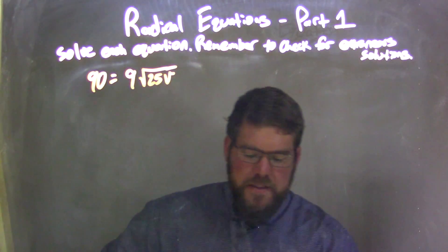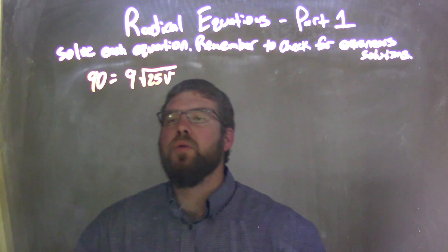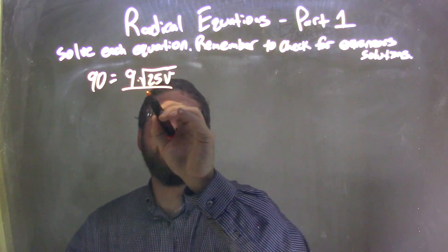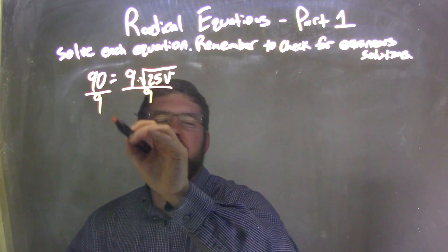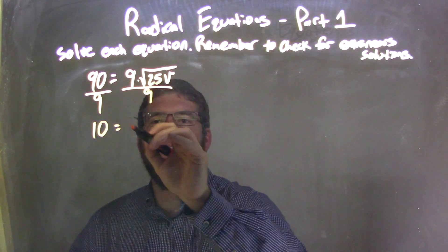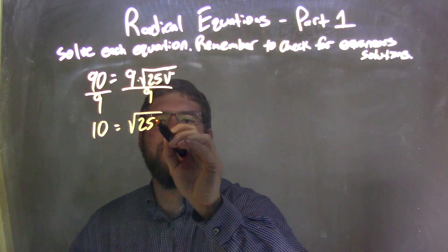There's multiplication like I said right there. So the opposite of that is division. Divide by 9 on both sides. 90 divided by 9 is 10. The 9's cancel, leaving the square root of 25V on the right.